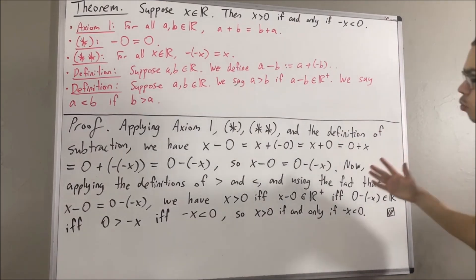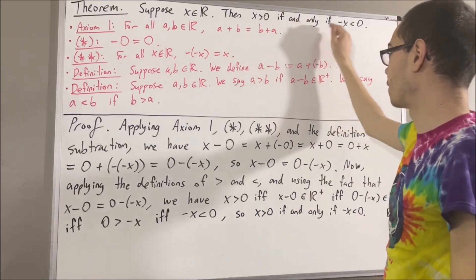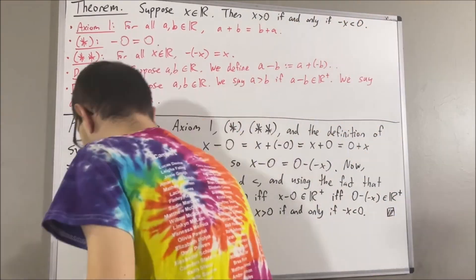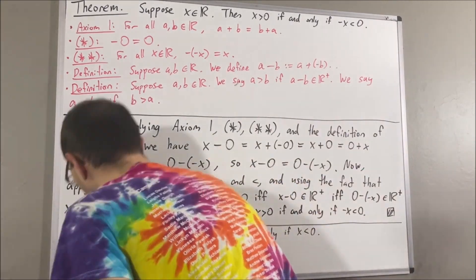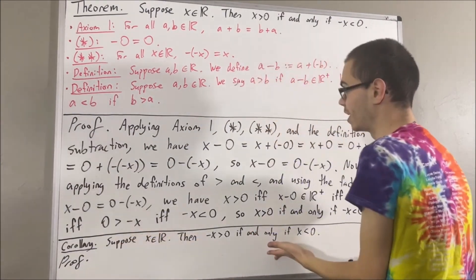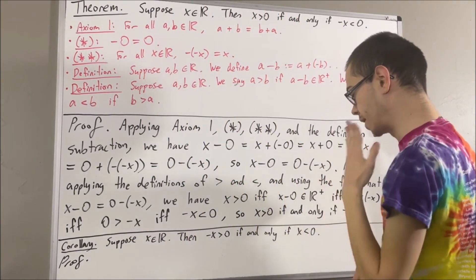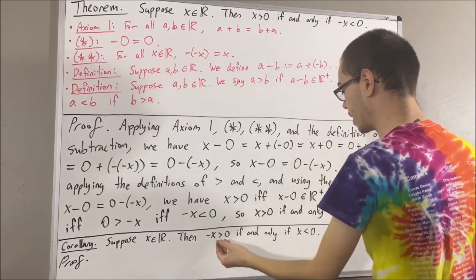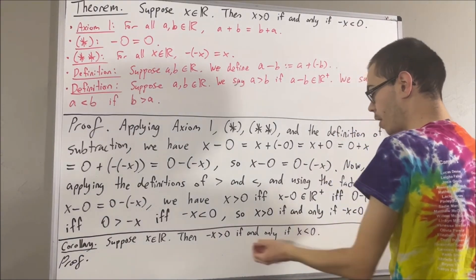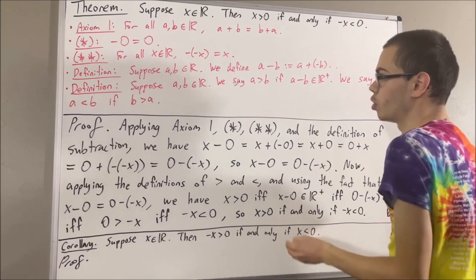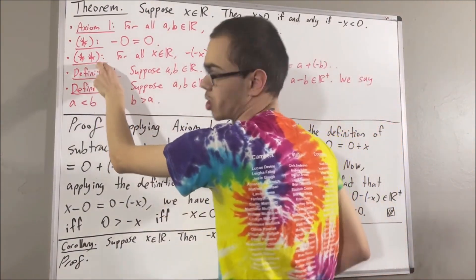Now, of course, we can also prove that negative x is greater than zero if and only if x is less than zero. This fact will immediately follow from this theorem. So again, we're going to establish a chain of if-and-only-ifs showing that negative x is greater than zero if and only if x is less than zero, applying the previous theorem and the result that the negative of negative x equals x.